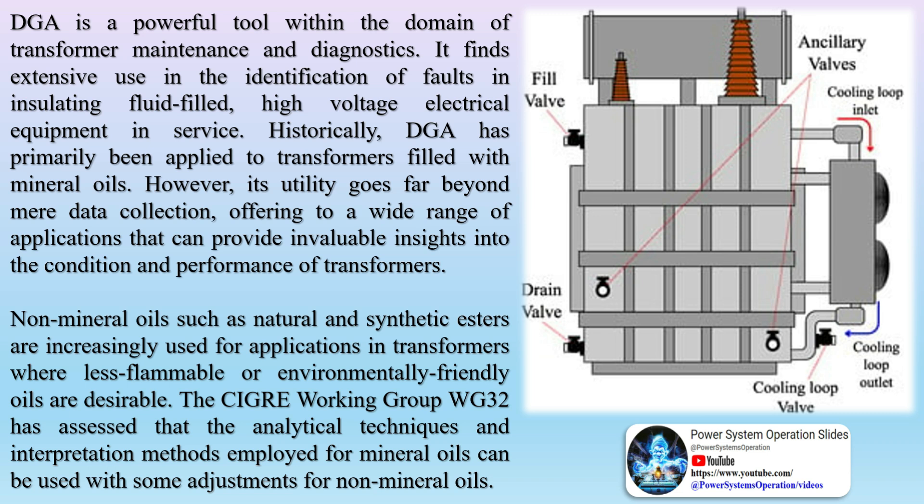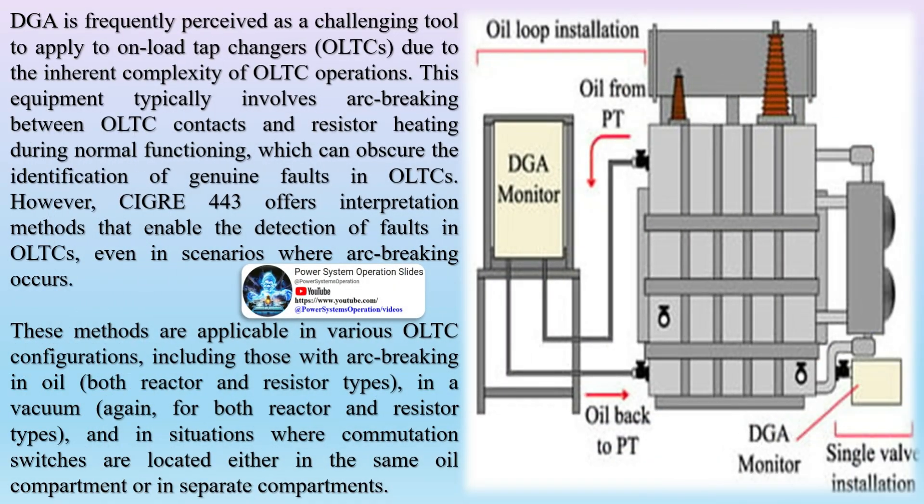DGA monitoring on power transformers: dissolved gas is a leading indicator of the health of a transformer. Dissolved Gas Analysis DGA helps determine the types of abnormal events that may be occurring within the main tank. It is an effective way to analyze partial discharge, arcing, excessive thermal conditions and more.